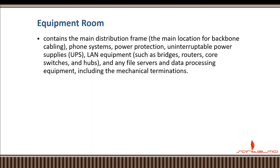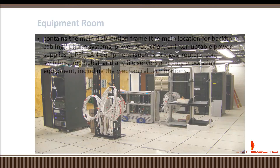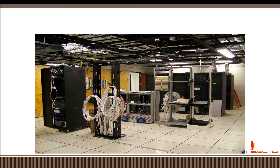The next area is the equipment room. The equipment room contains the main distribution frame — the main location for your backbone cabling, phone systems, power protection, a UPS, line equipment such as routers, switches, bridges, firewalls, hubs, and any file servers or server farm and data processing equipment, including mechanical terminations. A typical equipment room contains all your core devices. If you remember the hierarchy in network implementation, you have the core, the distribution, and the access layers — the core is located inside the equipment room.